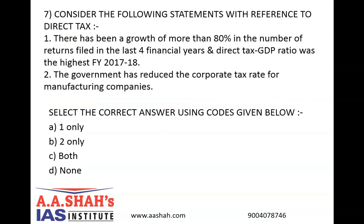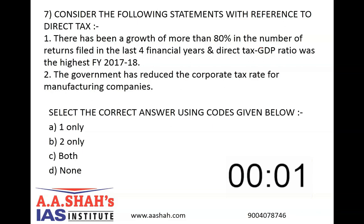Consider the following statements with reference to direct tax. Number 1: There has been a growth of more than 80% in the number of returns filed in the last 4 financial years and the direct tax to GDP ratio was the highest in FY 2017-18. Number 2: The government has reduced the corporate tax rate for manufacturing companies. Select the correct answer: A: One only. B: Two only. C: Both. D: None. The correct answer is C, both. Both statements are correct.